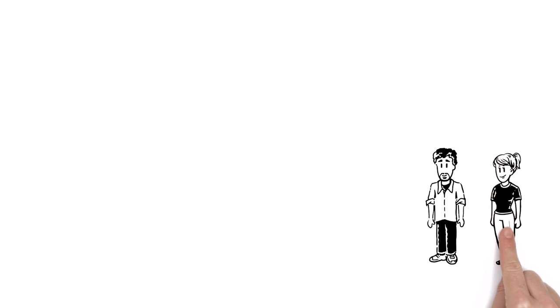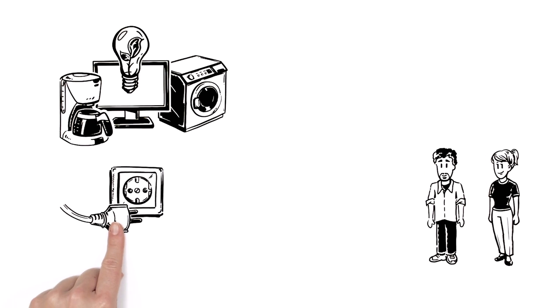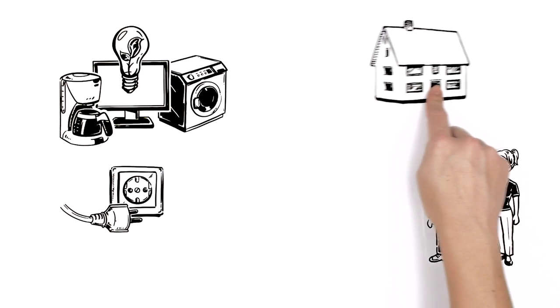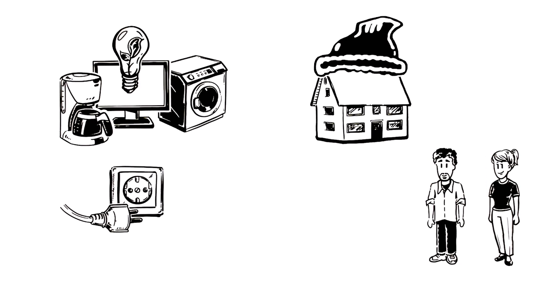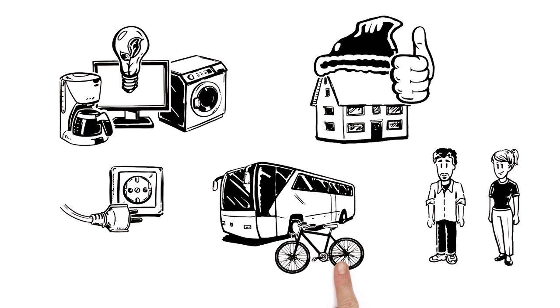Thanks to Mary, Tom chooses energy-saving electronic devices and unplugs them after use. Also, he's improved the thermal insulation of his house to heat it more efficiently. And as often as he can, he takes the bus or bike instead of the car.